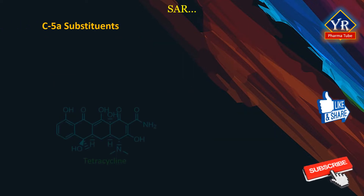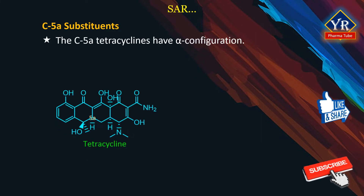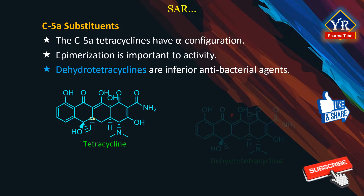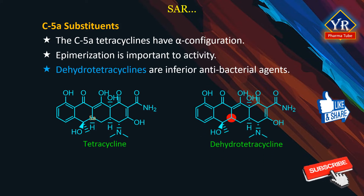C5a substituents. The configuration of the naturally occurring tetracyclines places the C5a hydrogen atom in an alpha configuration. Epimerization is detrimental to antibacterial activity and thus there has been little reason to explore this position. Dehydrotetracyclines, which are derivatives in which the C5a center is sp2 hybridized and part of a double bond to either the C5 or C6 position, are inferior antibacterials.